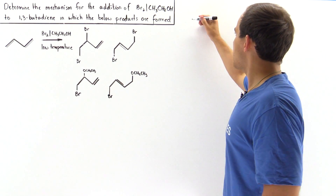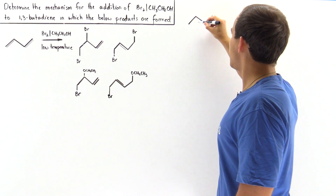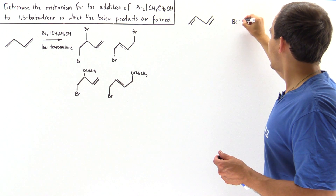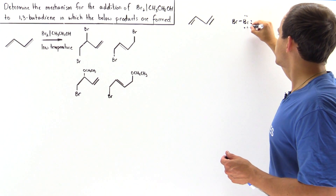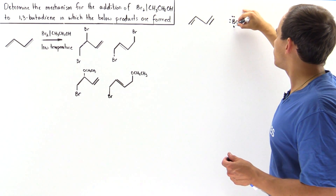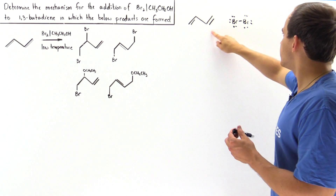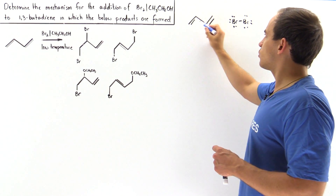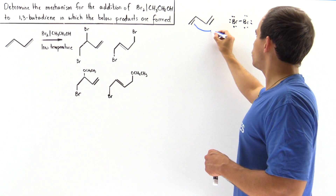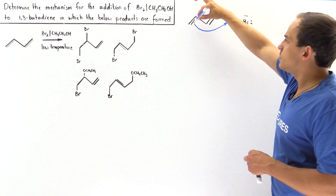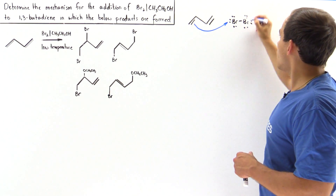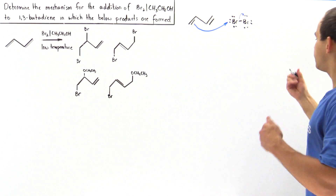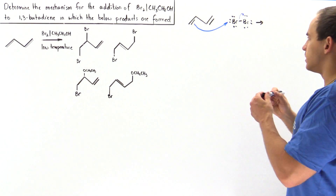Let's begin with our 1,3-butadiene molecule. We have our two double bonds and our diatomic bromine molecule. In the first step, one of our pi bonds attacks one of these bromines. Because we have symmetry, it doesn't matter which pi bond we use. This pi bond grabs this bromine, displacing the lone pair of electrons onto the second bromine, and we form a resonance-stabilized structure.